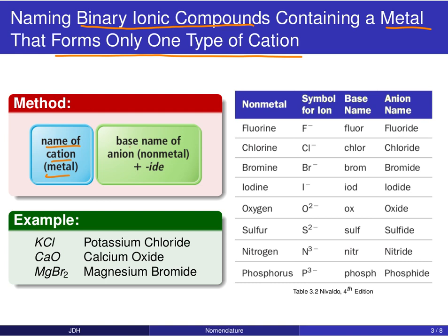Then you use the so-called base name of the anion or non-metal. The base name is obtained from the name of that non-metal by cutting off the ending: fluorine becomes 'fluor,' chlorine becomes 'chlor,' bromine becomes 'brom,' and so on. You take the base name of that anion and then put an '-ide' ending at the end.